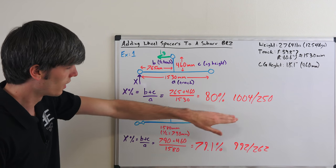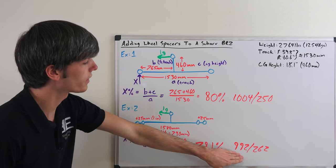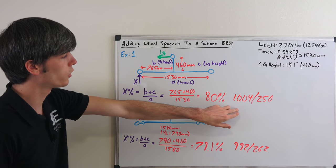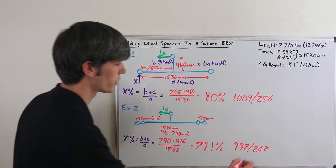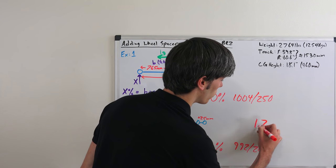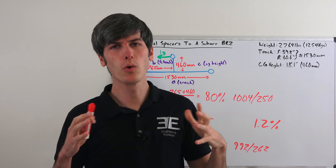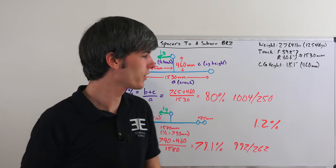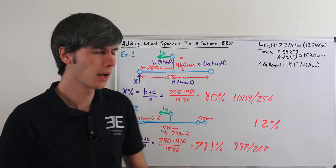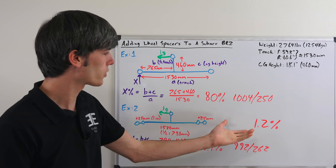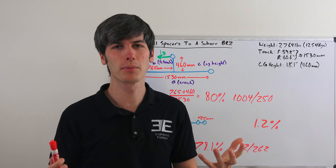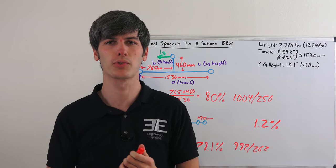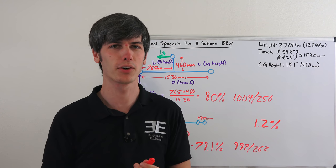So if you take 1004 divided by 992, that's about 1.2% more load transfer to the left side under stock conditions. So 1.2% difference in load transfer by using a wider track. Not very significant, probably something you couldn't even measure if you were to take it out onto a skid pad and do a ton of different tests before and after.